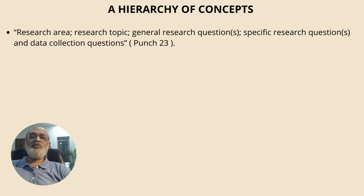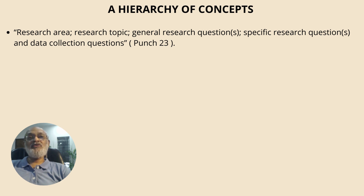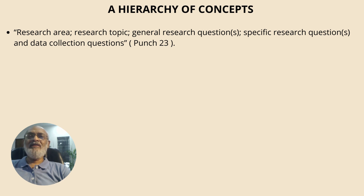It is a top-down approach. On the top we have the research area — broad and general. From this broad and general area, we have the research topic. Each research topic gives rise to a number of questions; the questions are general and broad. Then we have specific questions or sub-questions springing from the general question. Finally, we have data collection questions, which help in the research process by collecting data from different sources.